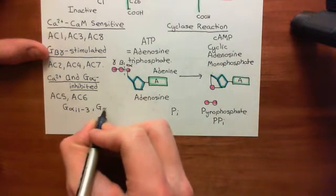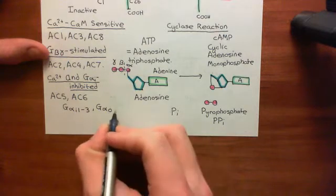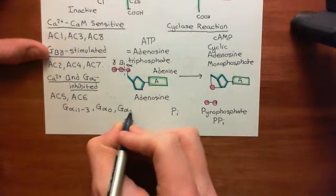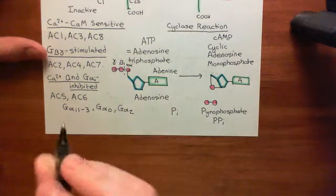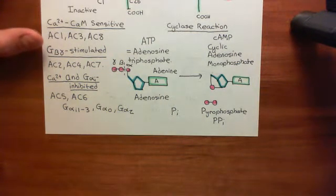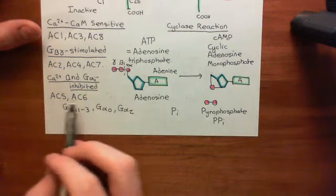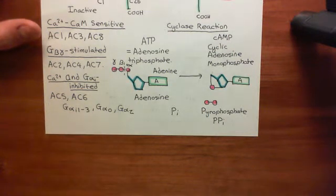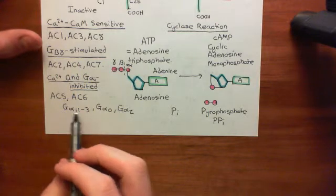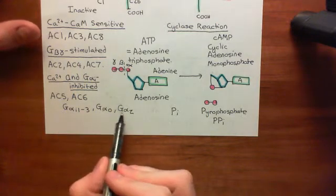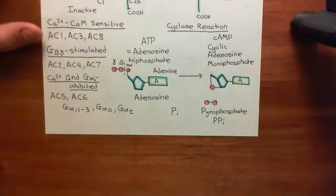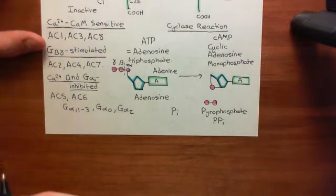In addition, the two splice variants of G-alpha-O will inhibit these, and G-alpha-Z will also inhibit them. This is important to understand: whilst the alpha-S-GTP subunits activate all adenylyl cyclases, the alpha-I subunits do not inhibit all adenylyl cyclases. They inhibit some of them — adenylyl cyclases 5 and 6 — along with their close relatives, the alpha-Os and the alpha-Zs.